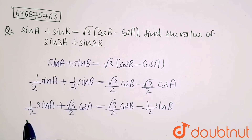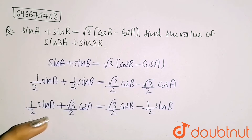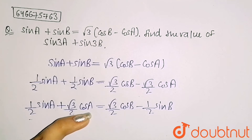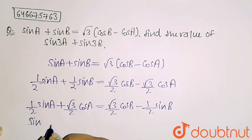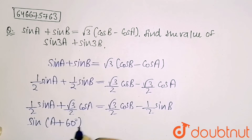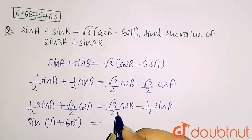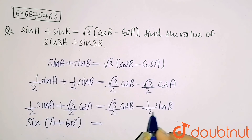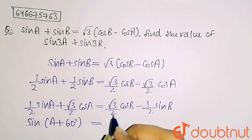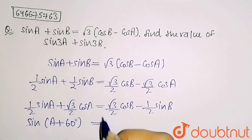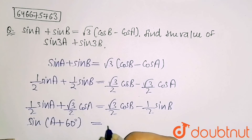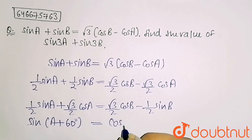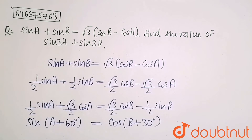You can consider these coefficients as 30 degree or 60 degree angle values. This is 60 degrees. So sin A cos 60° plus sin 60° cos A gives the formula sin(A + 60°). On the other side, cos A cos B minus sin A sin B forms the formula cos(A + B), which equals cos(B + 30°).